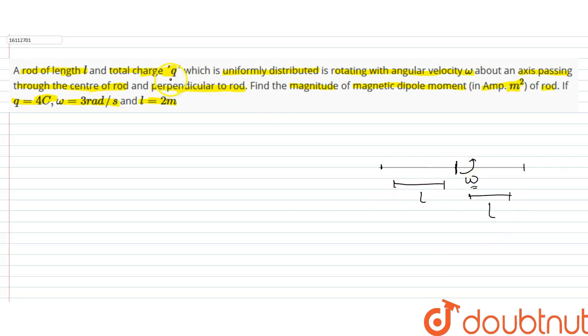We need to find the magnetic dipole moment. What is the formula? Suppose we call the magnetic dipole moment M. This is equal to I times A, where I is current and A is area of the loop.